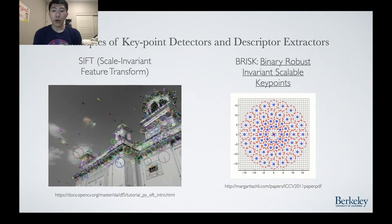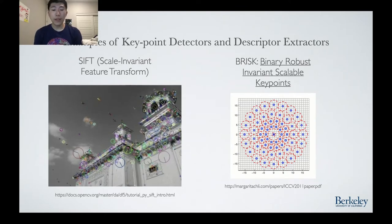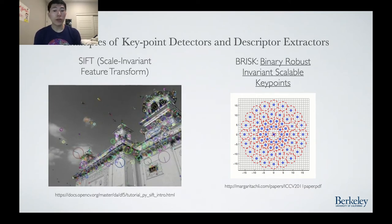BRISK, short for Binary Robust Invariable Scalable Key Points, is a more recent algorithm. It achieves competitive and sometimes better results but with faster computation time. The image depicts the sampling pattern that BRISK uses for generating a feature description. In their paper, they report a 3x speed increase when finding correspondences between two images over older algorithms such as SIFT. Correspondence matching being one of the more intensive portions of the SLAM algorithm means this speed increase is greatly appreciated.